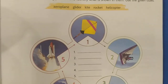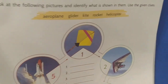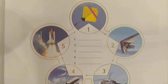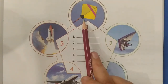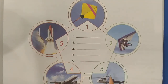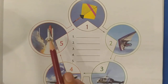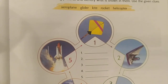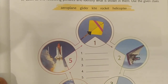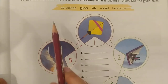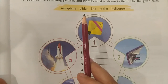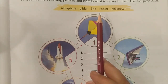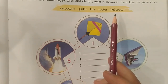Children, five pictures are given to you — you can all see these five pictures: one, two, three, four, and five. Some clues are also given to you. You can see: aeroplane, glider, kite, rocket, and helicopter.